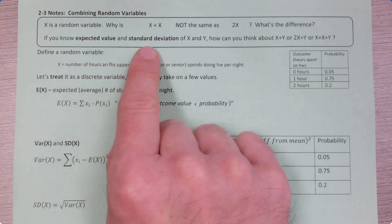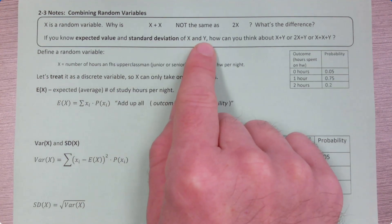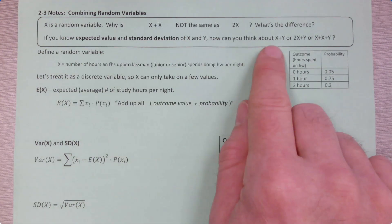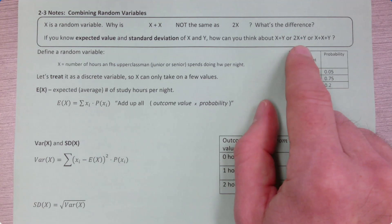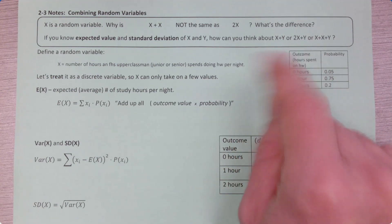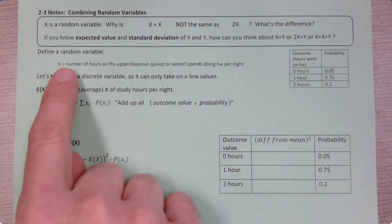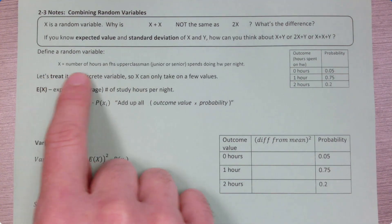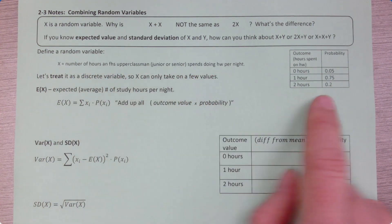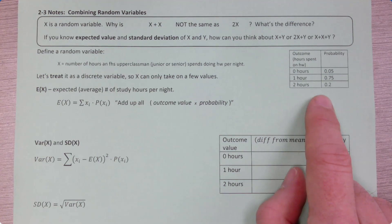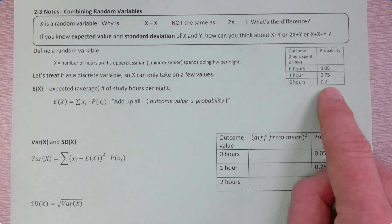And if you know the expected value and standard deviation of a variable, or of two variables, how can you calculate those same things if you're going to combine variables in different ways — if we're going to add x and y together, or do 2x plus y, or something like this. We'll also look at some situations where you might want to do that. So, let's say x is our random variable — the number of hours a Fremont High School upperclassman spends doing homework per night. I sampled a whole bunch of upperclassmen and got these outcomes: 0, 1, or 2 hours, with these probabilities.